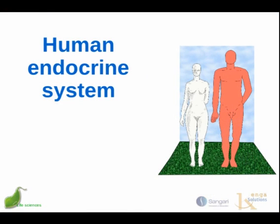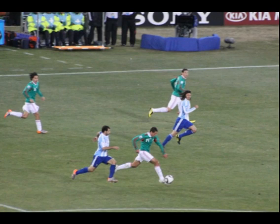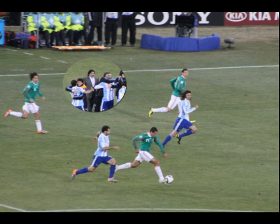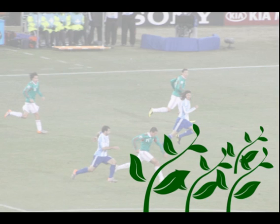Remember when we talked about the human endocrine system, we discussed our hormones and said they were signal molecules. We used the analogy of the coach in the World Cup soccer signaling the players, signaling the team. Well, plants also have hormones — they serve a similar signaling purpose, sending signals out within the plant body. But in the case of plants, you'll have to imagine the signals without the coach.